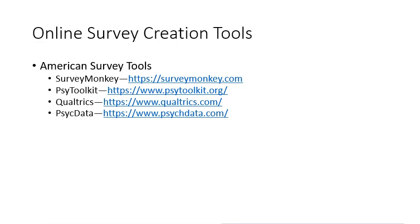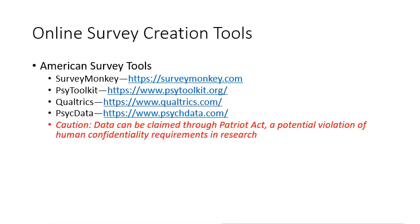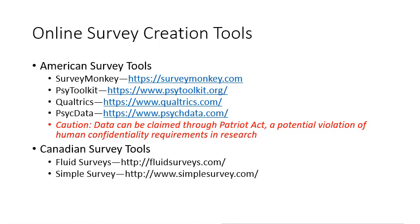One thing to be aware of: under the Patriot Act, if there were reason to want information from one of your survey respondents, they could access your data — which would violate the confidentiality you promised participants. Some researchers use Canadian survey tools like Fluid Survey, Simple Survey, or Lime Survey to avoid this risk. If you can't 100% ensure confidentiality, participants should be aware and it needs to be included in your informed consent.